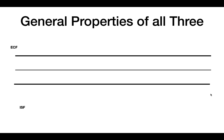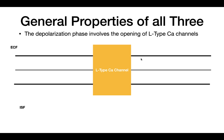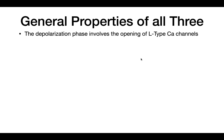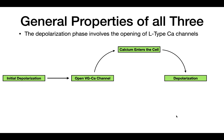Let's talk about the general properties of all three. In all three action potentials, there is an upstroke or depolarization, and this depolarization involves the opening of L-type calcium channels. These channels open in response to depolarization, allowing calcium to flow into the cell, which further depolarizes it. This creates a positive feedback cycle: initial depolarization opens voltage-gated calcium channels, calcium flows in, increasing depolarization, which opens more channels.